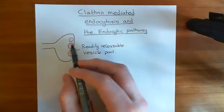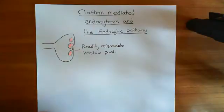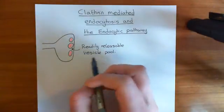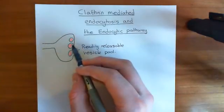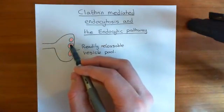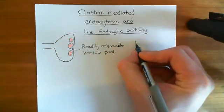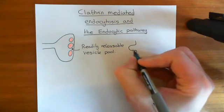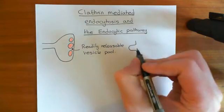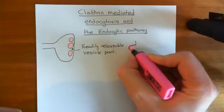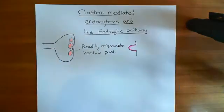When an action potential arrives in the axon terminal, we exocytose the synaptic vesicles from the readily releasable vesicle pool. This means we fuse the membrane of the synaptic vesicle with the plasma membrane, adding in all the membrane that came from the synaptic vesicle — increasing the surface area of the axon terminal cell membrane.